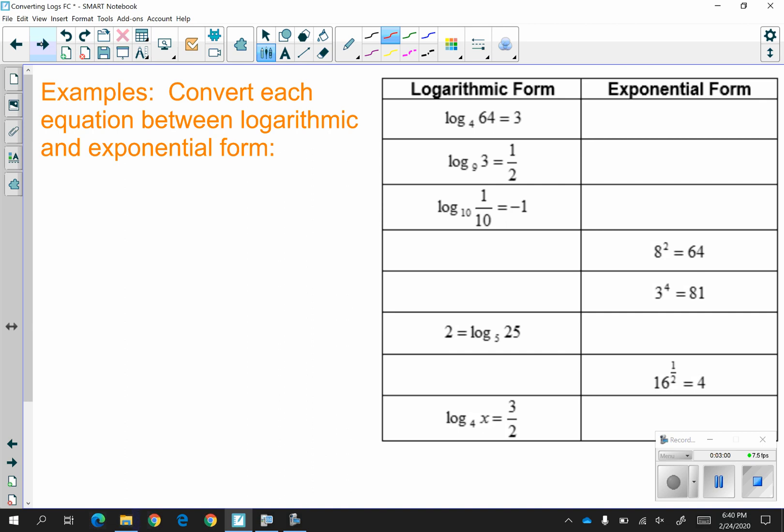So let's actually practice this rule. For the first one, your base, remember b for below, is 4. And you're going to switch the other two values. The 3 on the right is going to come to the left. And the 64 on the left is going to go to the right. And that makes sense because 4 cubed is 64.